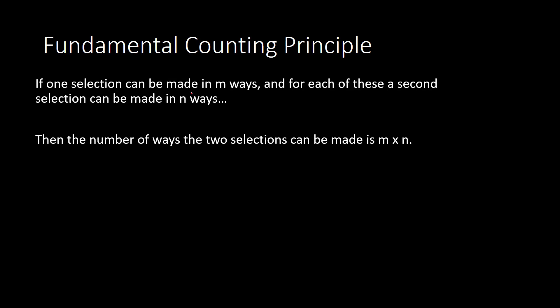This principle is going to carry us through the whole topic of probability. In probability, we need to determine how many total options there are, because we need to determine how many favorable outcomes there are and divide that by the total number of possibilities. In the next couple of lessons, we are going to learn how to count, or determine, how many total possibilities there are.